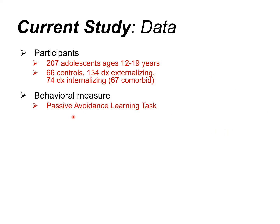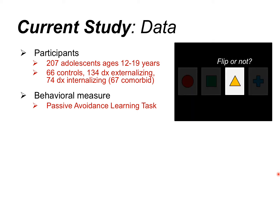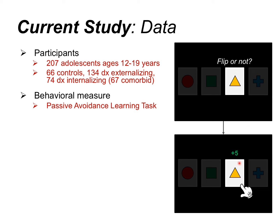To examine behavior we used the passive avoidance learning task, which resembles four-armed bandit tasks used in decision science. Participants are shown four different cues and on each trial one is presented; the decision is to go or no-go — to flip it over or not. Two cues are probabilistically associated with rewards when flipped and two with punishments, so the task is to learn which cues to flip versus which to passively avoid. For example, you might flip a cue and receive or lose five points.